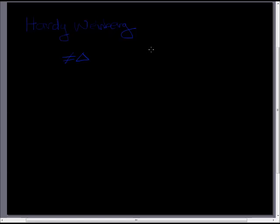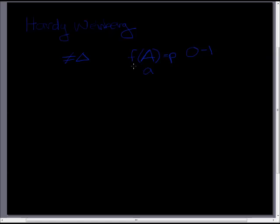Let's start out just thinking about a population that has two alleles. We're going to call these big A and little a — your book calls them A1 and A2, and that's fine too. The frequency of big A, meaning the number of big A alleles over the total number of alleles in the population, we're going to call this number P. This is a number between 0 and 1. If the number is 1, the big A allele is 100% of the population; if it's 0, there are no big A alleles.